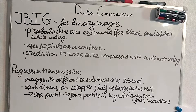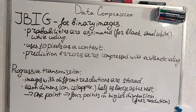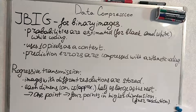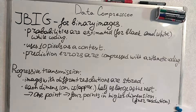Let's dig a little bit into image compression. JBIG is used for binary images. Probabilities are estimated for black and white pixels while coding, because binary images only contain black and white pixels. JBIG uses 10 pixels as a context. The prediction errors are compressed with arithmetic coding.